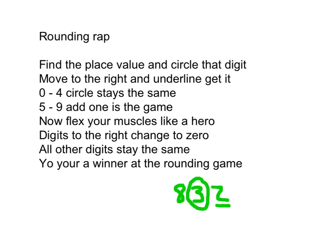0 to 4, circle stays the same — you're looking at that underlined digit. If it's 0 to 4, the circled number stays the same. If it was 5, 6, 7, 8, or 9, then we add 1 to that circled digit — add 1 is the game. Flex your muscles like a hero: digits to the right change to 0. The rounding wrap says those numbers after the circled digit change to 0. Finally, all other digits stay the same. Yo, you're a winner at the rounding game. So 832 rounded to the nearest tens place is 830.